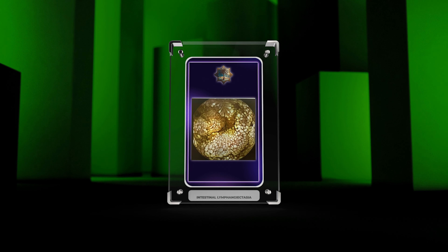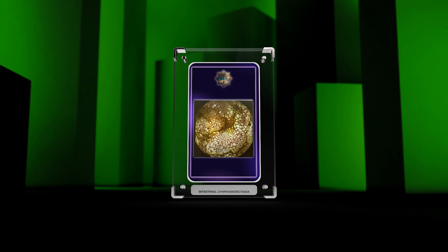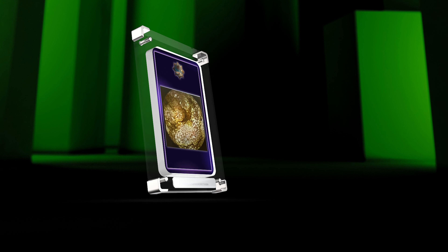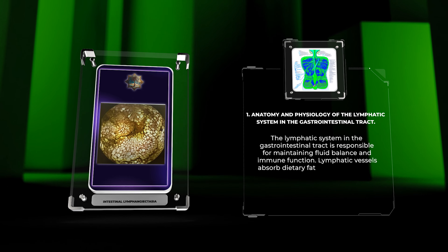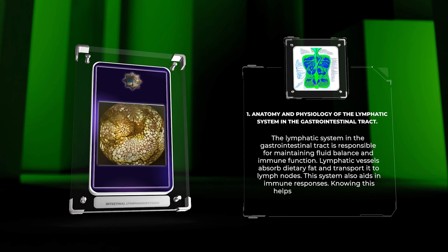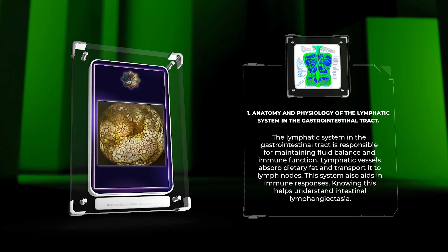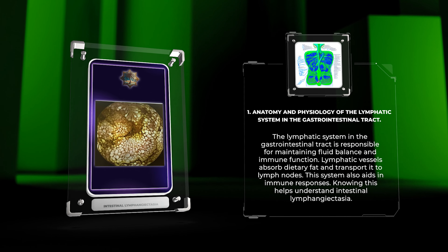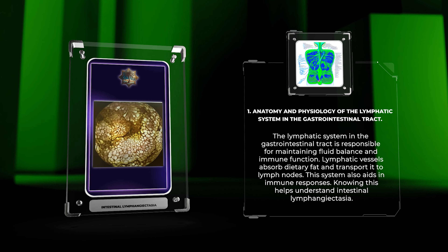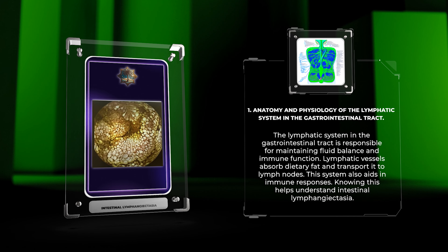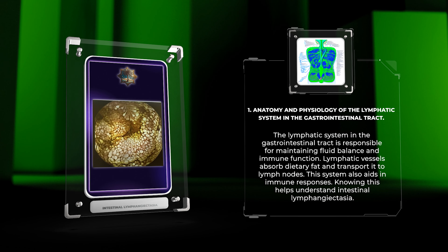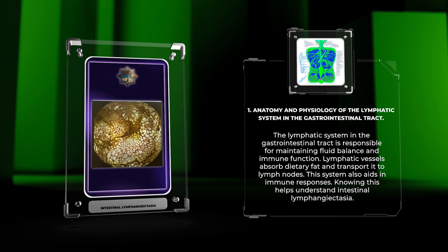The lymphatic system in the gastrointestinal tract is responsible for maintaining fluid balance and immune function. Lymphatic vessels absorb dietary fat and transport it to lymph nodes. This system also aids in immune responses, and understanding this helps explain intestinal lymphangiectasia.